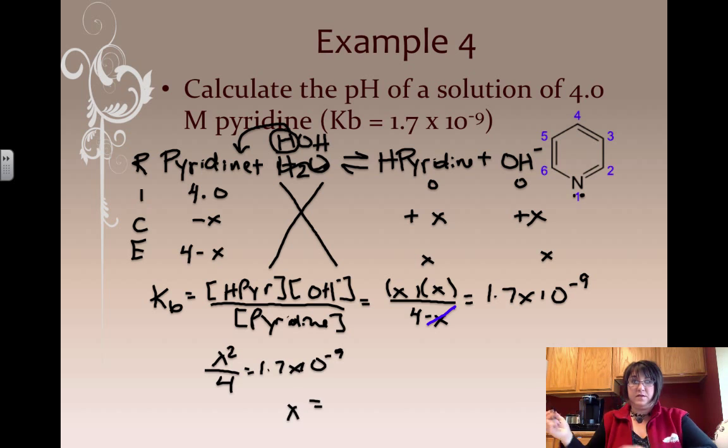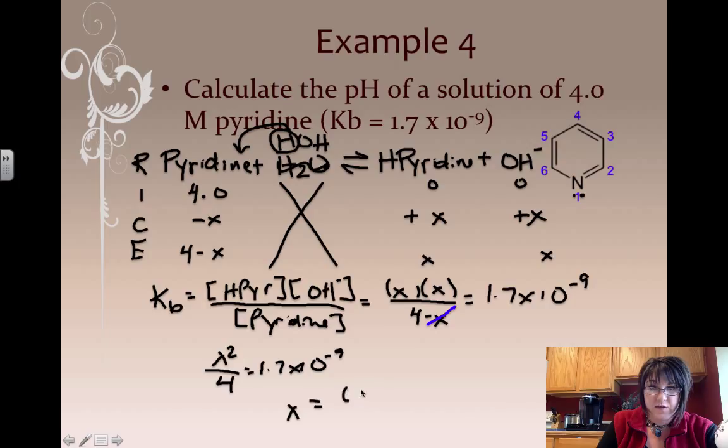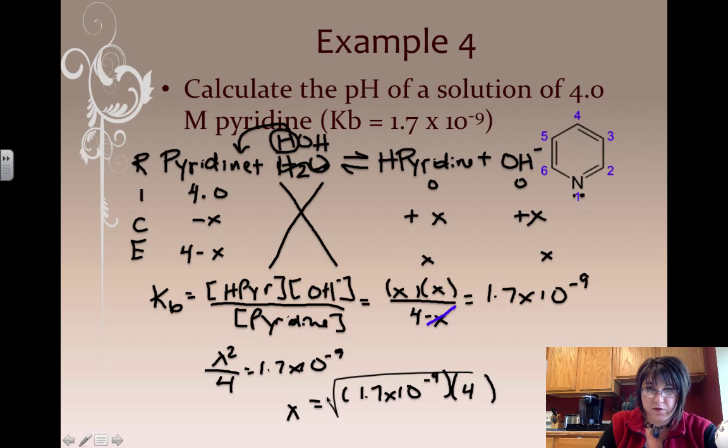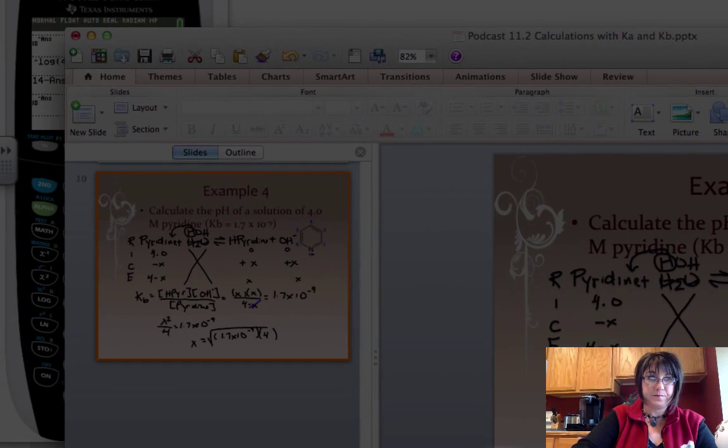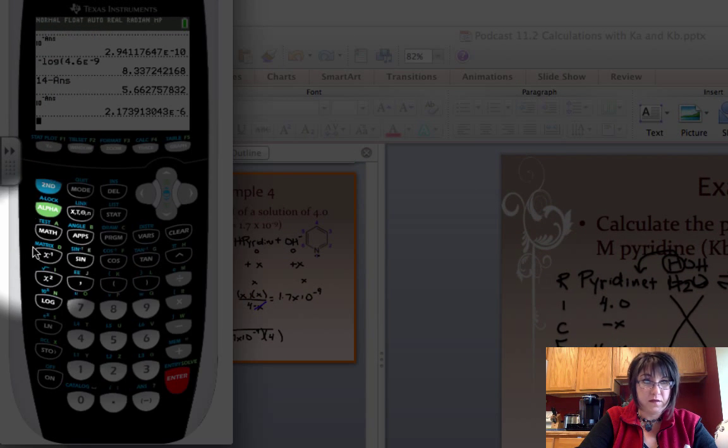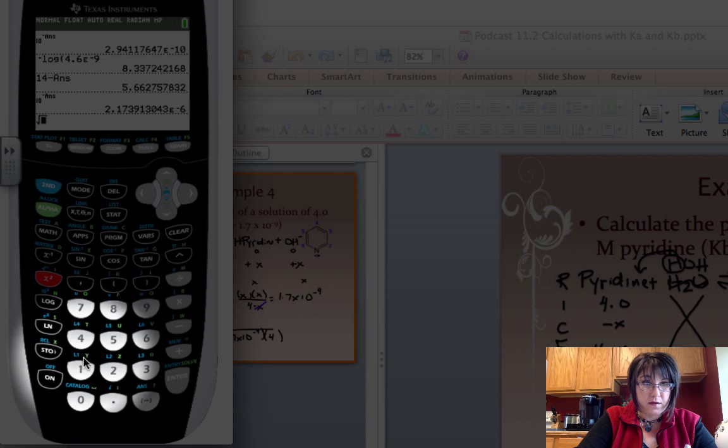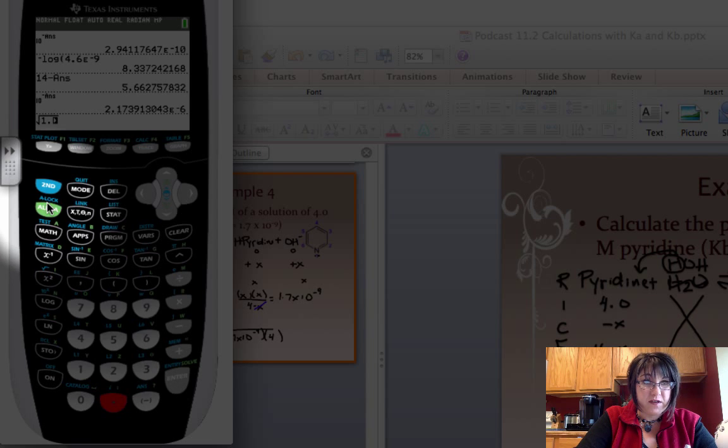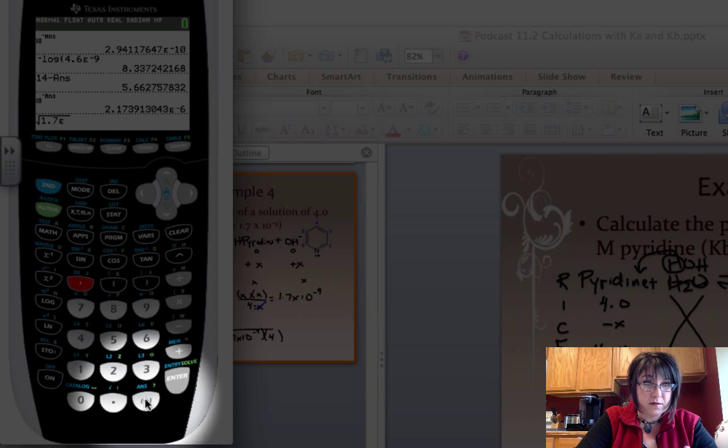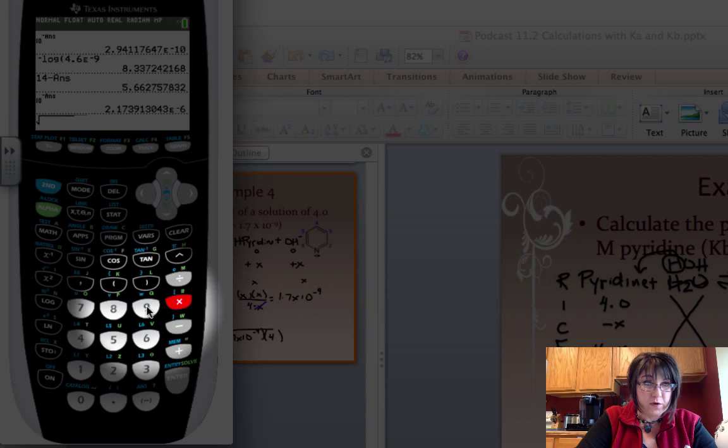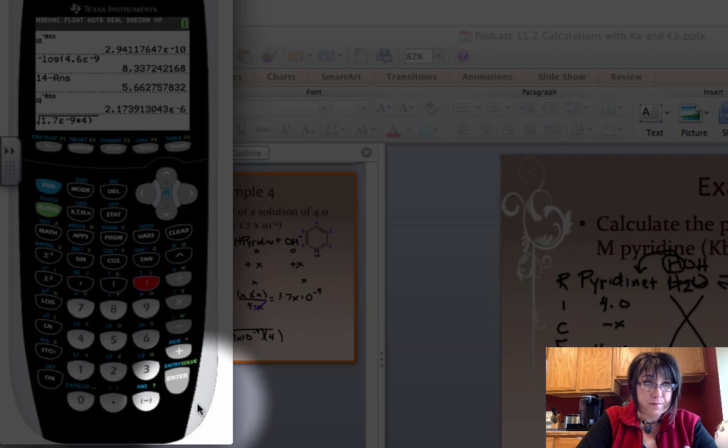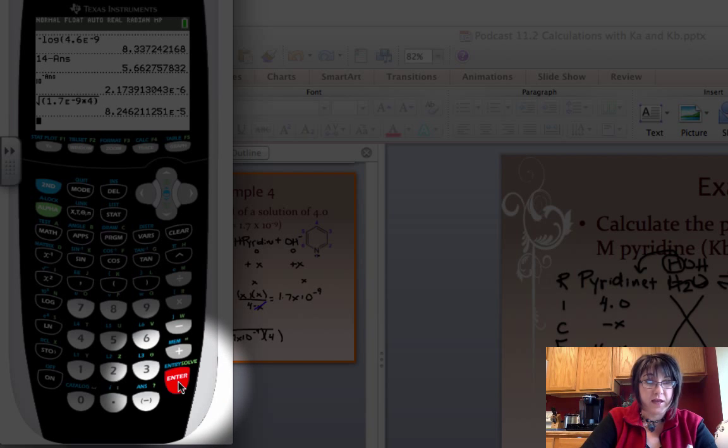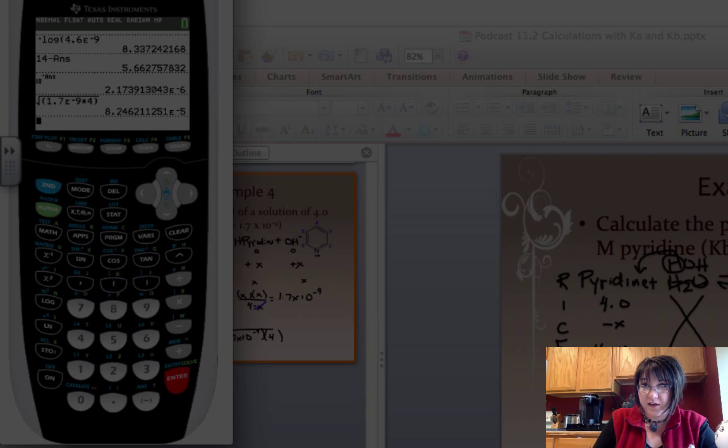So I have X squared over 4 equals 1.7 times 10 to the minus 9. Solving for X, I need to take 1.7 times 10 to the minus 9, multiply by 4, and then take the square root of that whole thing. The square root of 1.7 times 10 to the negative 9 times 4. I get 8.246 times 10 to the minus 5 is the value for X, but X represents the hydroxide ion concentration.